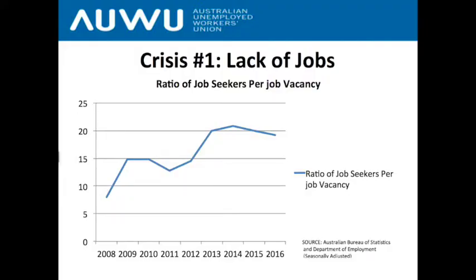First I'll provide some background on where we are right now in Australia. The Unemployed Workers Union has identified four major crises happening at the moment. The first crisis is the lack of jobs — this is the elephant in the room. It's very rarely understood or spoken about just how many people are competing amongst themselves for the very few jobs available in the Australian labour market.